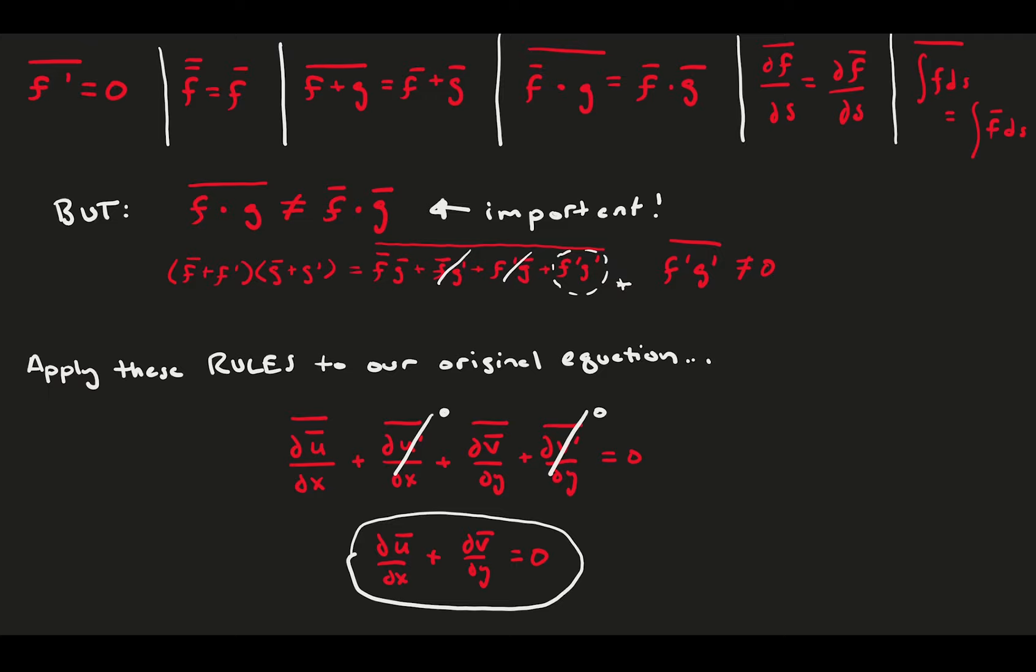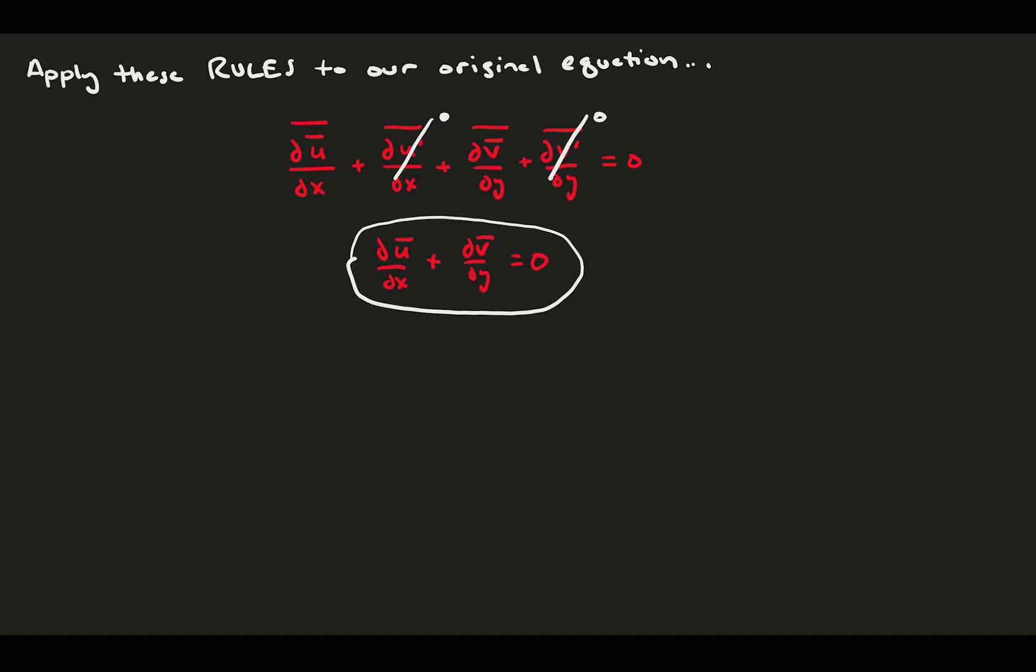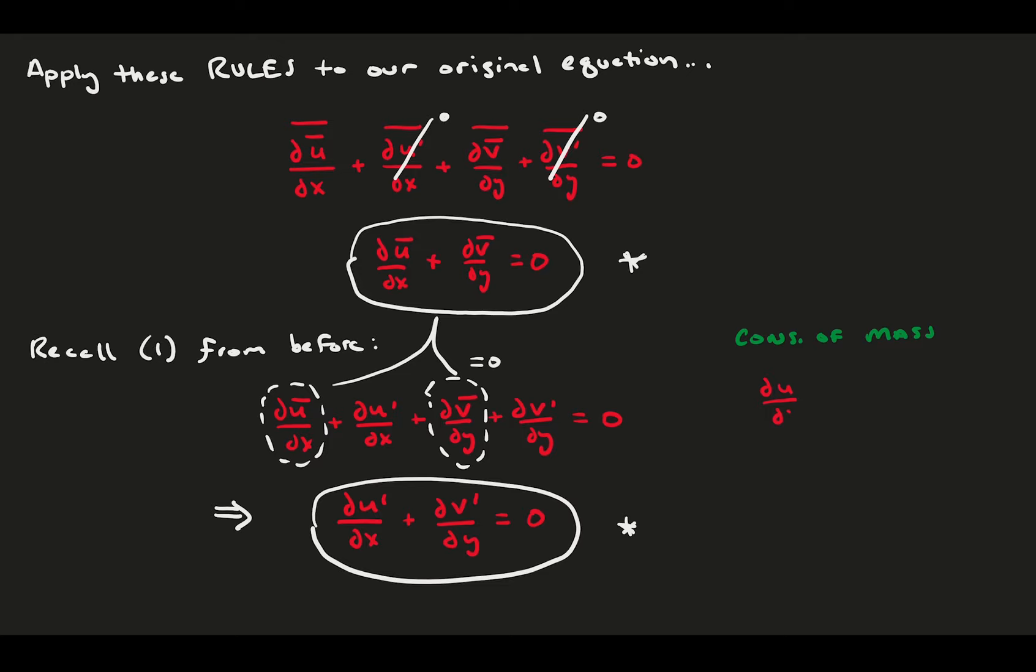But we can't stop here. Let's try and squeeze this equation for all it's worth. This is a separate equation that says the mean quantities sum to zero, and it can be reapplied to the original equation that has both mean and fluctuating quantities. This gives us a second equation that says the fluctuations independently also satisfy the equation. So with this simple example of 2D incompressible conservation of mass, we got two useful equations through Reynolds decomposition and averaging. The mean satisfy conservation of mass, and the fluctuations satisfy conservation of mass separately.